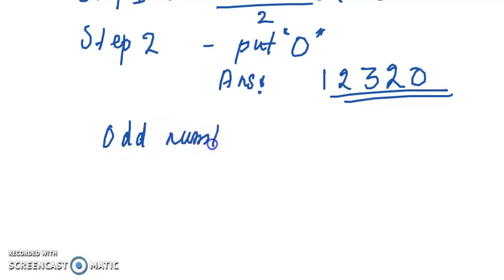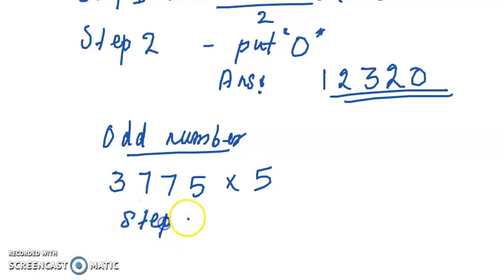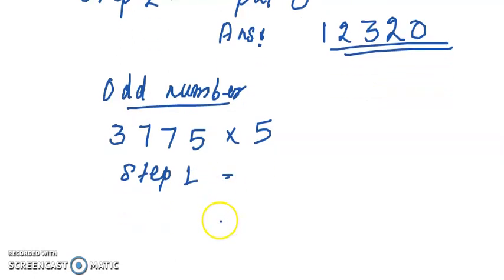As an example, if we wish to multiply 3775 times 5, in the first step we take half of just before this number. So 3775 minus 1, you take, and then we can take the half of that number.